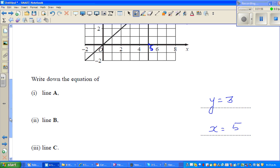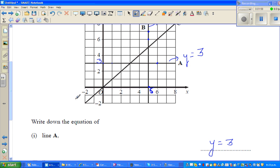Now the last line is line C. So here, if you look at any point on this line, so this is 1, so you can say this is 1, 1. This point is 2, 2. This point is 3, 3, and so on.